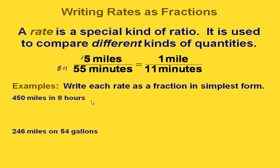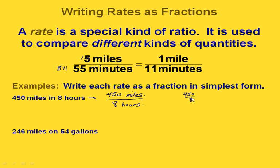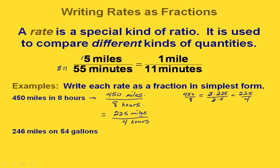Let's write each of these rates as fractions in simplest form. For 450 miles in 8 hours, we put 450 miles on top and 8 hours on the bottom. The key difference between rates and ratios is that with rates you must write the units in both places. Both 450 and 8 are divisible by 2, so we cancel to get 225 miles over 4 hours.